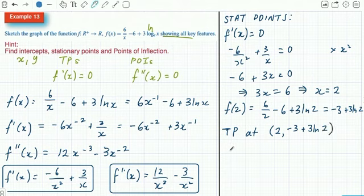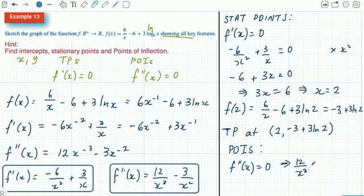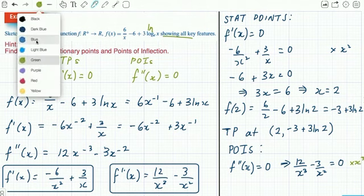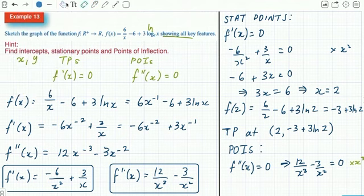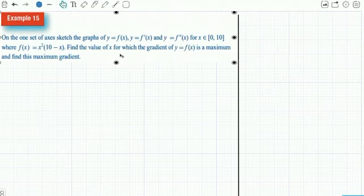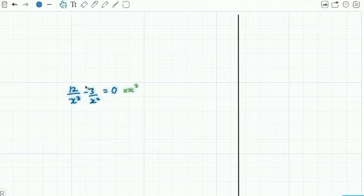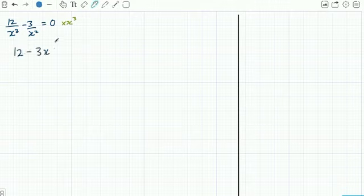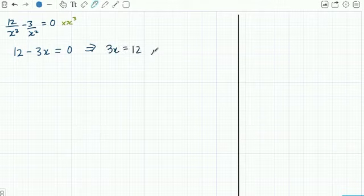We also want any points of inflection. Let the second derivative equal 0, which implies 12/x³ - 3/x² = 0. I'm going to multiply both sides by x³, which gives 12 - 3x = 0, so 3x = 12 and x = 4.